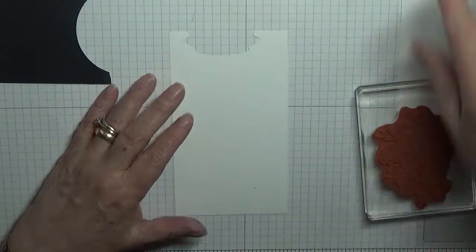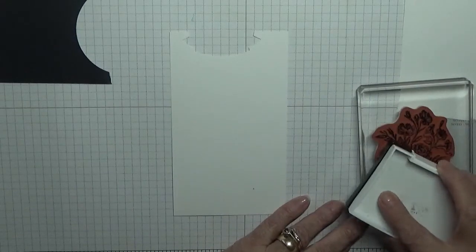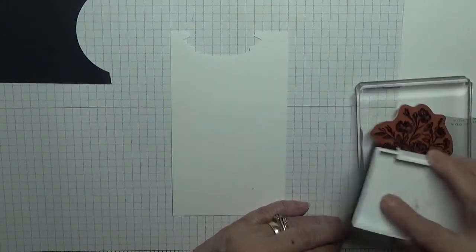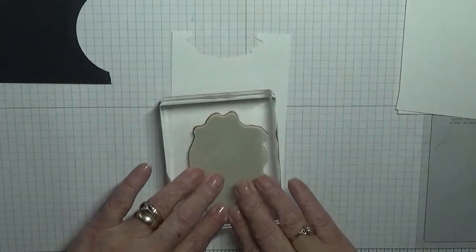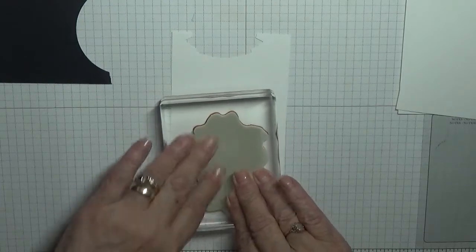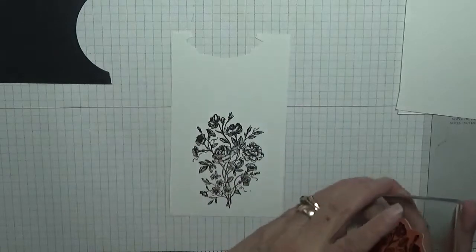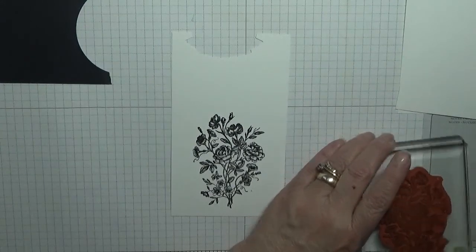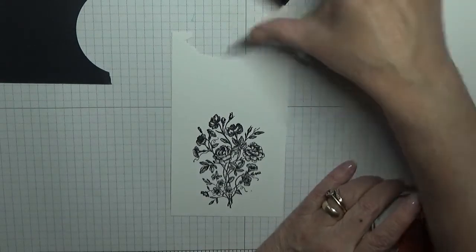We'll stamp the flower first. So we'll stamp that there. Once that's dry we'll bring the big shot up and cut it out. Clean the stamp like that.